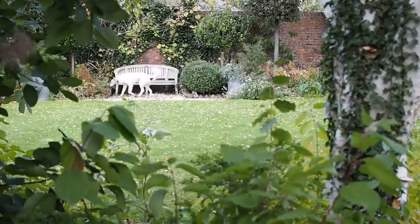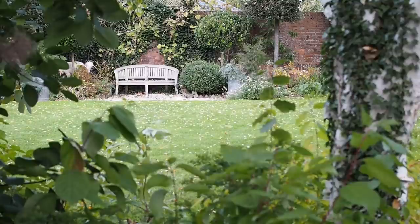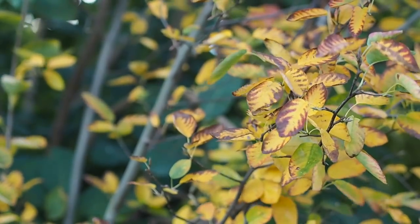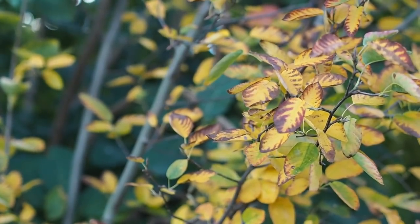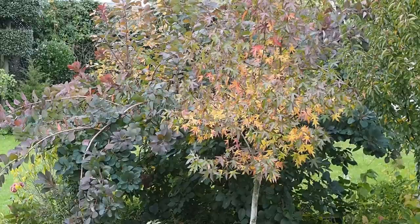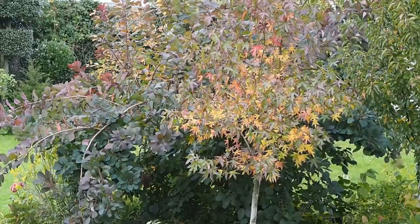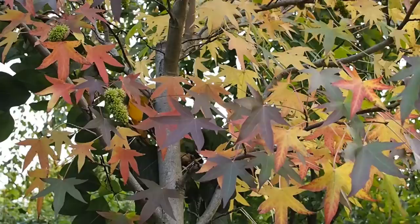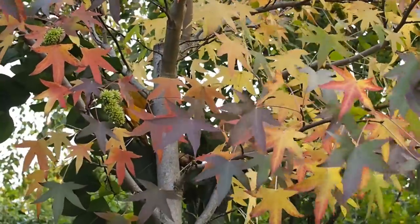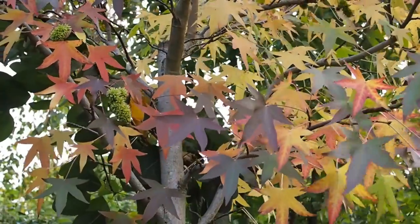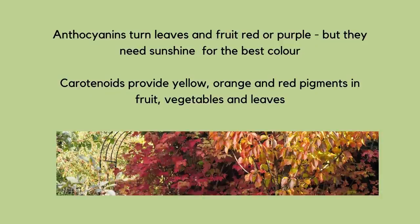Chlorophyll makes leaves green and it's chlorophyll that allows leaves to translate sunshine into nutrition for the plant. As summer ends, the chlorophyll gets reabsorbed into the plant, so other elements in the leaves become more prominent and they dictate the colour. When you see leaves turning yellow, that's because of carotenoids — the ingredient that makes carrots orange — but to get the reds and purples of autumn you need something called anthocyanins. Anthocyanins are at their best with lots of sunny days and cool but not freezing nights, and they become weaker if you have a lot of rain.